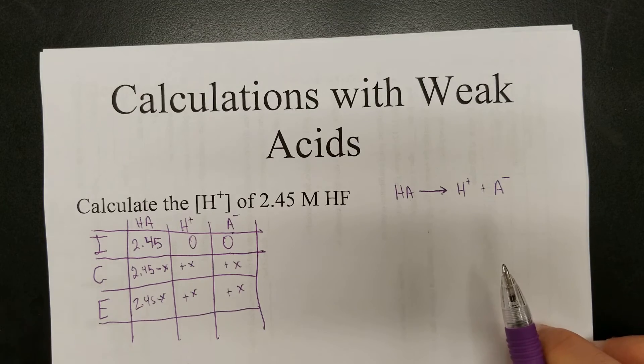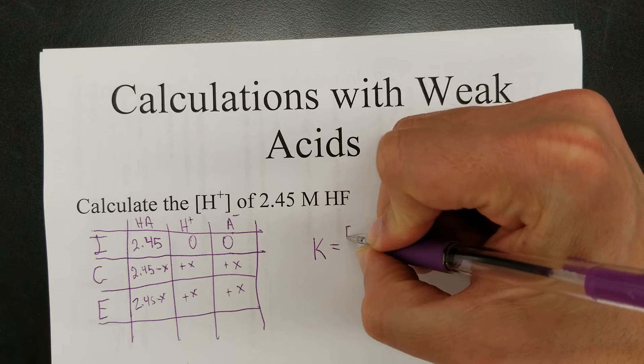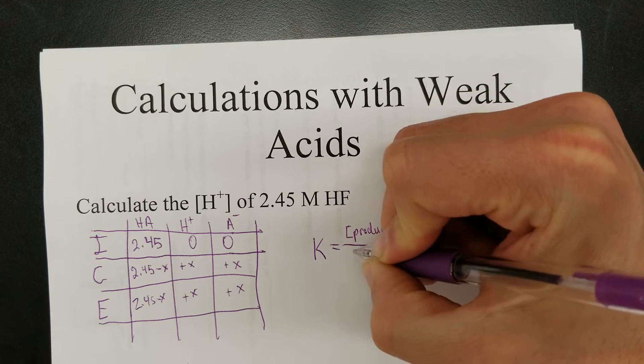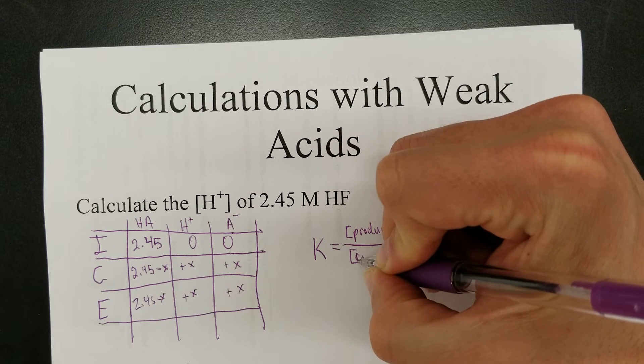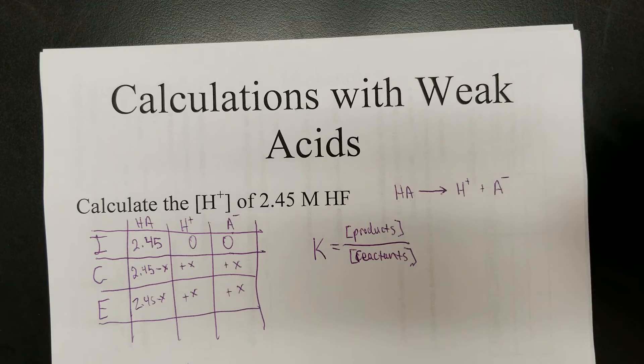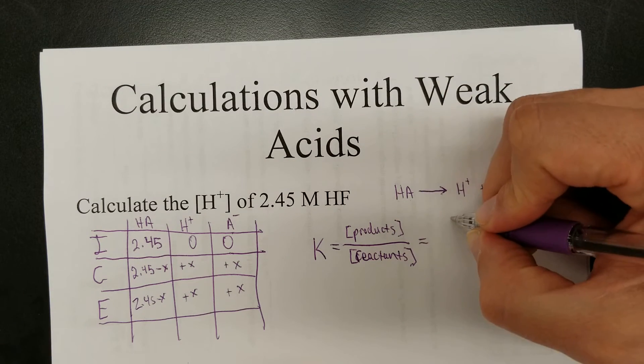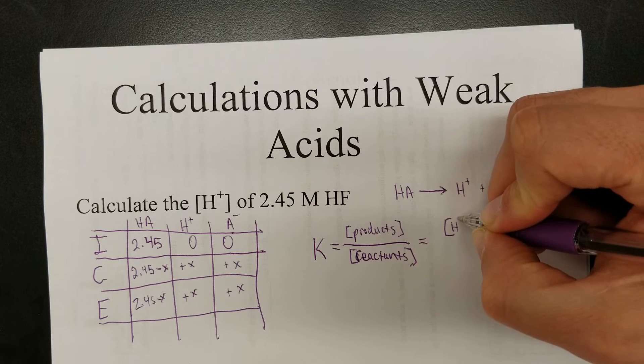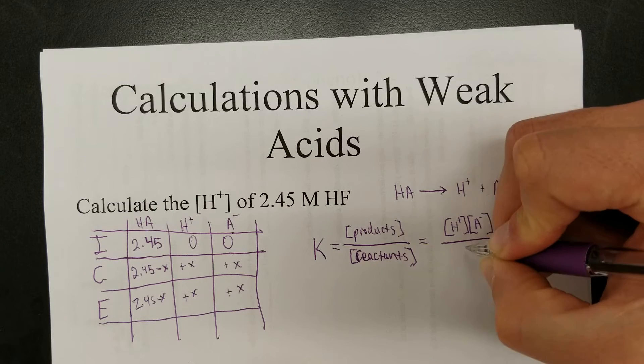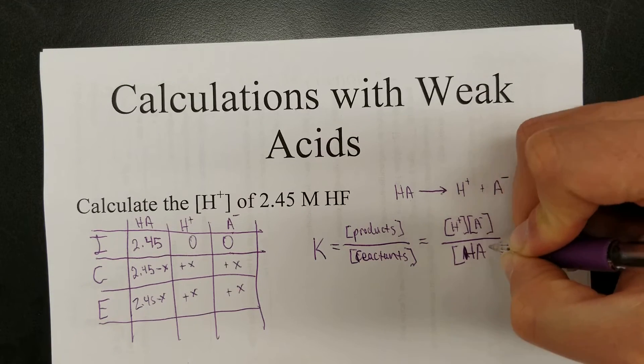So let's look at that in terms of an equilibrium expression. Remember, for equilibrium expressions, K equals products, or rather concentration of products over the concentration of reactants. Like so. In this case, what we're looking at is concentration of hydrogen ion times concentration of anion divided by concentration of the acid, HA.